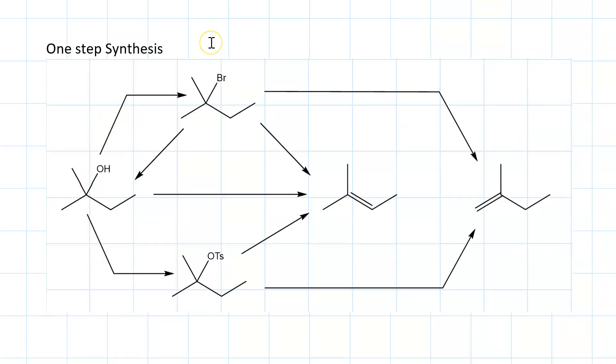With tertiary alkyl halide, SN2 is out of the question because of sterics. So, if we wanted to take a tertiary alkyl halide to a tertiary alcohol, we'd use water. If we wanted to go back the other way, we'd use sodium bromide.